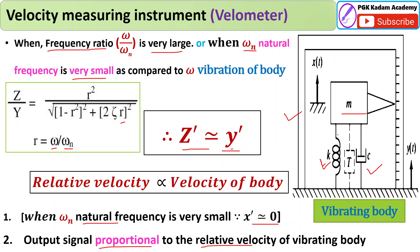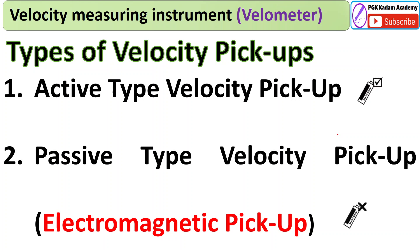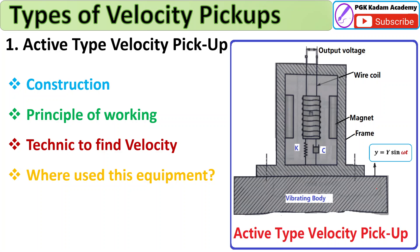Two types of velocity pickups are there: active type and passive type. Active type requires a battery or power source; passive type does not. The passive type velocity pickup is also called electromagnetic pickup. We will see each one — construction, principle, and working technique.